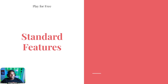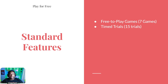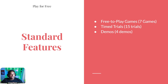So what do you get with Stadia when playing for free? You get 7 free-to-play games, 15 time trials — where you get 30 minutes up to two hours to try a game — and 4 demos, which are short versions of games you can play as many times as you want, usually around 30 minutes each. One important tip with time trials: if you start a trial and leave, the timer keeps running. Don't start a two-hour trial if you don't have two hours.